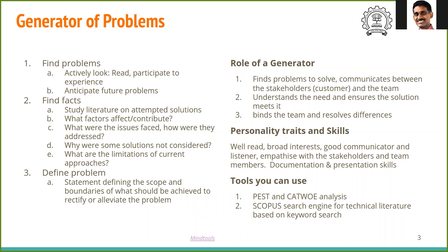The Generator is a person who actively looks for problems. They have to find problems, read a lot of articles, participate with the ultimate beneficiary to experience what the actual problem is, articulate it in words, and discuss with others. There's a lot of communication involved — reading, talking, listening. They should also be capable of anticipating future problems, whether from the existing scenario or because the solution provided may change something else.